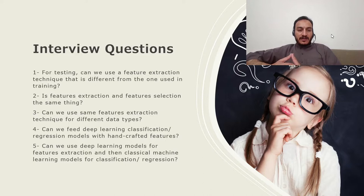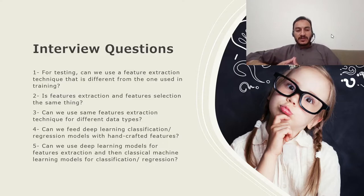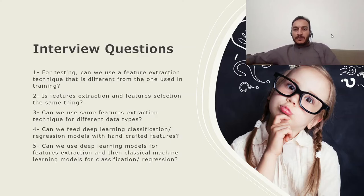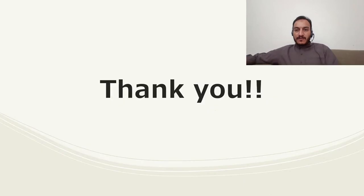The fifth question is: can we use a deep learning model for feature extraction and then a classical machine learning model for classification and regression? Yes — it is possible to use the initial layers of a deep learning model to extract features and then feed those features to a classical machine learning model like SVMs.